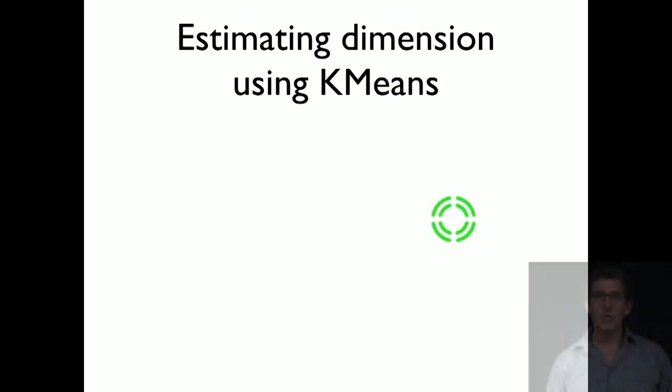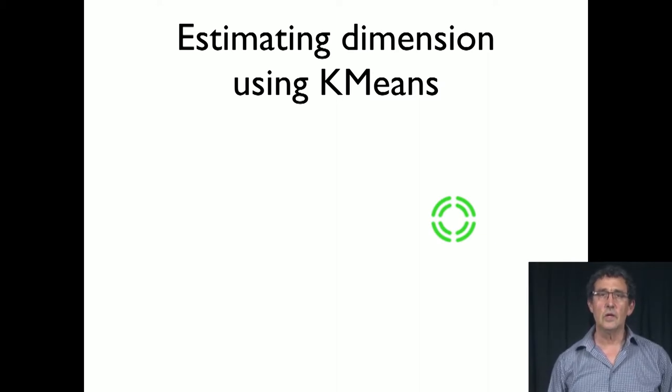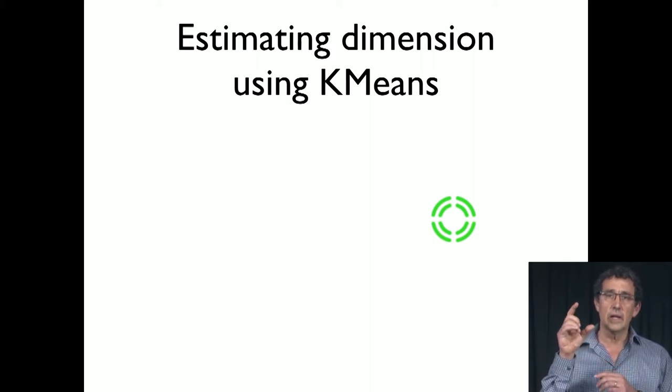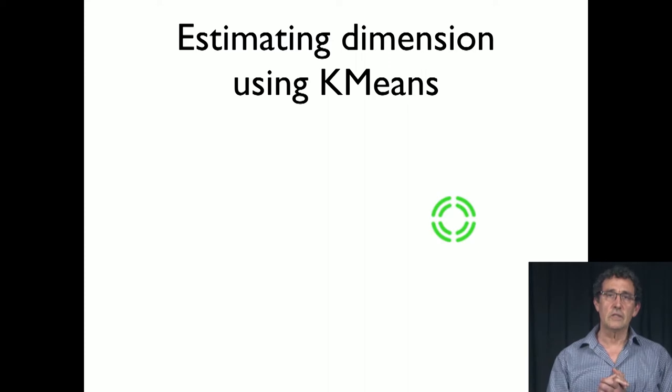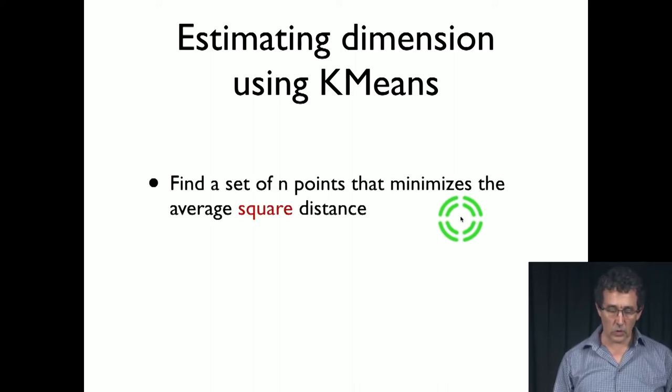We're going to switch our method a little bit to a method that is easier to use, which is the k-means method. Rather than measuring the diameter of each cell, we're going to measure the distance of a random point to its closest representative, the closest k-means representative.